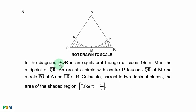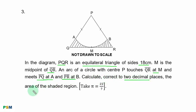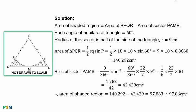Question 3. In the diagram, PQR is an equilateral triangle of sides 18 cm. M is the midpoint of QR. An arc of a circle with center P touches QR at M and meets PQ at A and PR at B. Calculate, correct to two decimal places, the area of the shaded region. Take pi equal to 22 over 7.